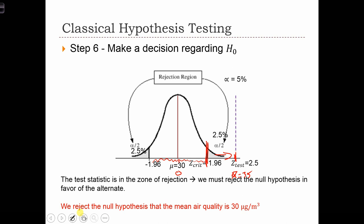So in other words, we conclude that we reject the null hypothesis that the mean air quality level in the Wasatch Front is 30 micrograms per meter cubed.